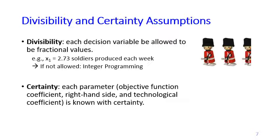Finally, the certainty assumption says that each parameter — whether in the objective function, the right-hand side, or the technological coefficients in the constraints — is known with certainty. This means that if the finishing hour for one soldier is two hours, you know for certain it is always two hours. It never varies to 1.5, 2.3, 3.7, or any other value — it is always known for certain.